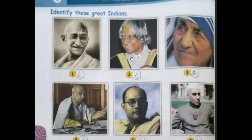The second one is A.P.J. Abdul Kalam. He was an Indian aerospace scientist and politician who served as the 11th President of India. His full name was Abul Pakir Jainulabdeen Abdul Kalam, so we will write E here.